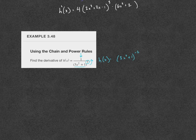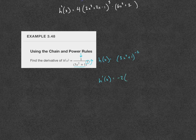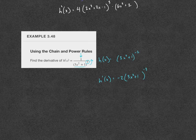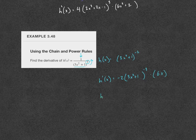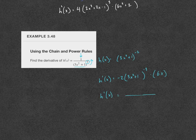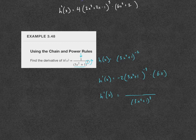Bringing the denominator up with a negative exponent, I can now take the derivative h prime. The derivative of the outer function: I have something to the negative 2 power, so negative 2 comes down, the something stays the same, and we do negative 2 minus 1 is negative 3. Then we multiply by the derivative of the inside, which is 6x. I'm going to clean this up: since (3x² + 1) was in the denominator, I'll drop it back down, so it's (3x² + 1) to the third in the denominator, and negative 2 times 6x gives negative 12x.